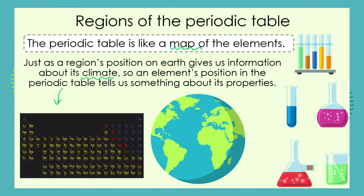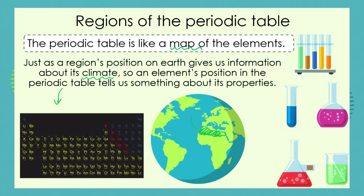If I were to point to this region of Africa, we would know that we're talking about the area where the Sahara Desert is, and so you would be able to predict that it's very hot there, it's very dry, it doesn't rain a lot — and you would be quite correct in making these predictions because of the region of the Earth.